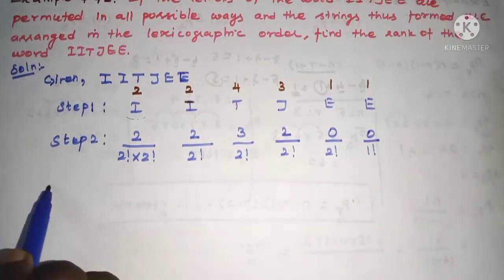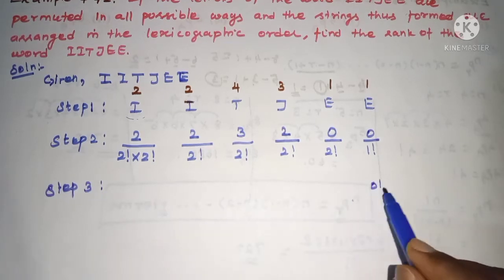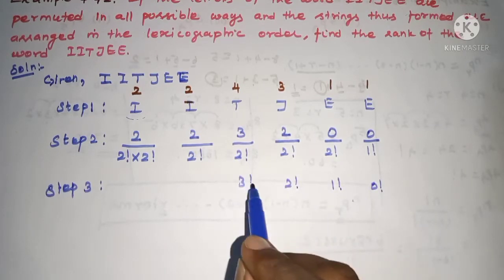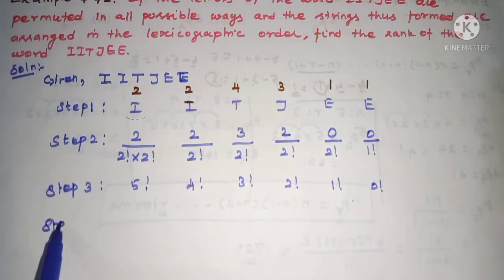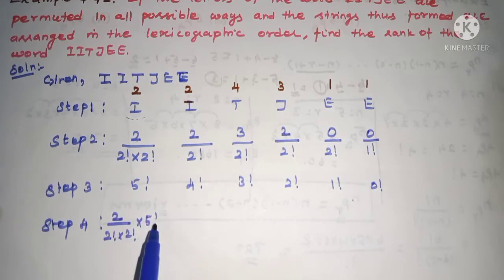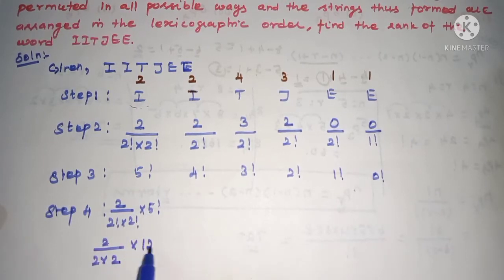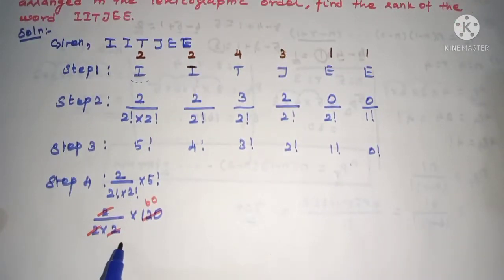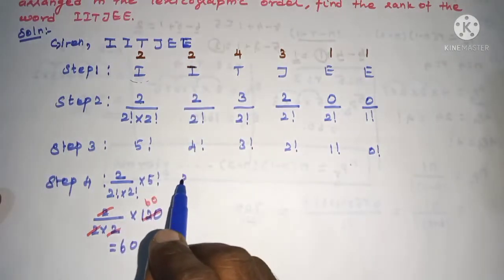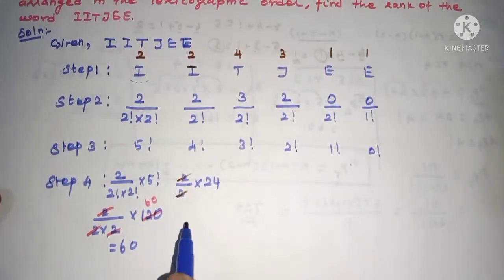Step 3: Apply factorials. 0 factorial, 1 factorial, 2 factorial, 3 factorial, 4 factorial, 5 factorial. Step 4: Now solve. 2 by 2 factorial into 2 factorial into 2 factorial. So 2 divided by 2 factorial. We know 5 factorial is 120. So 2 will cancel, cancel, cancel. We get 60.